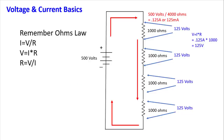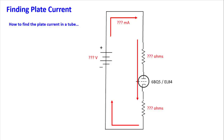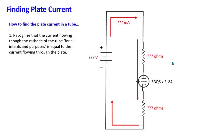Now let's talk about how to find the plate current in a tube. Looking at a typical tube amplifier circuit flipped upside down, we may not know the power supply voltage, the current flowing, or the resistor values — maybe all we know is that there's a 6BQ5 tube inserted. Let's walk through the steps. First, recognize that the current flowing through the cathode of the tube is, for all intents and purposes, equal to the current flowing through the plate.